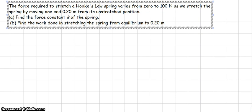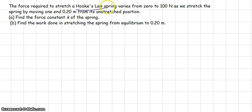Okay, this problem is about the work done in stretching a spring. So let's say we have a Hooke's Law spring, and what that means is that the spring obeys the force law that the force vector is negative kx vector, where x is the displacement and k is the spring constant in newtons per meter.